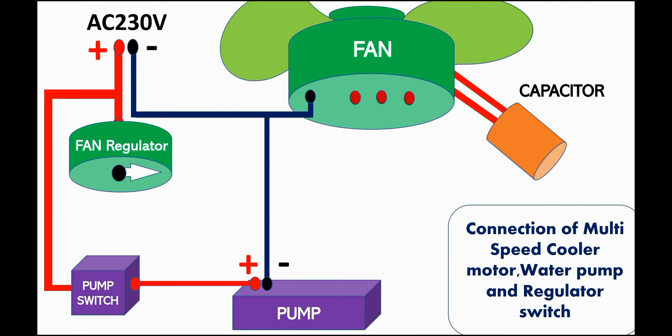Fan regulator switch has 4 positions: off, slow, medium, and high. Resistance check is required to identify the slow, medium, and high terminals of 3-speed fan. Here I am introducing another simple method.